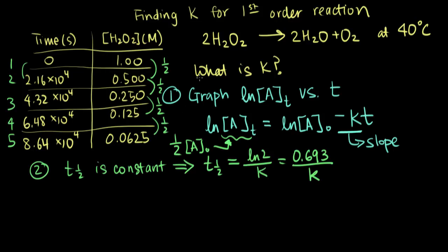In fact, for all of these data points, if you look at any two data points, the concentration goes down by half. And it always takes 2.16 times 10 to the 4 seconds. So we know that our half-life is equal to 2.16 times 10 to the 4 seconds.